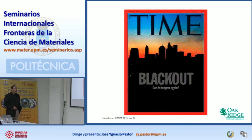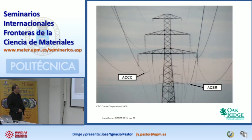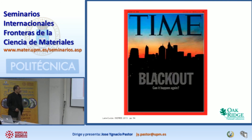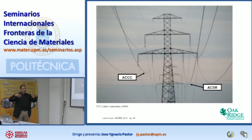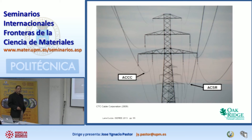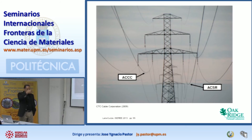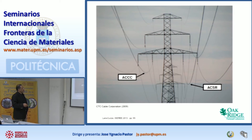Another area that isn't sexy is the grid. This is a cover of Time Magazine — we had a major blackout in the Northeast US a few years ago when a high-voltage transmission line fell because of a tree, triggering a chain reaction across the whole Northeast. These cables get very hot when you pass current through them; when they get hot they start sagging, and if there are trees near the cables they can get entangled and rupture.